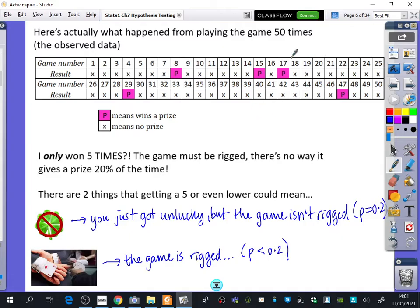And we're going to finish it for this one that we've actually got here. So let's try and find out the probability that I got a 5 or even lower. Because if I got a 4, 3, 2, 1, or a 0, that would also make me think that the game was rigged. Which is why I'm going to look at 5 or lower.